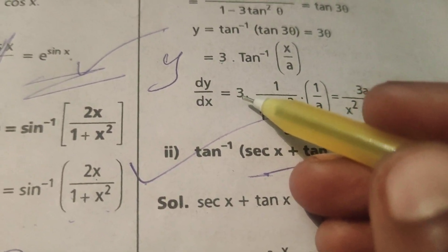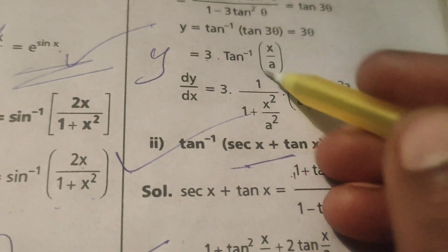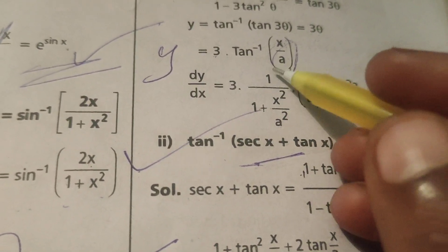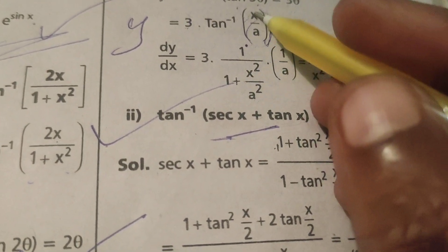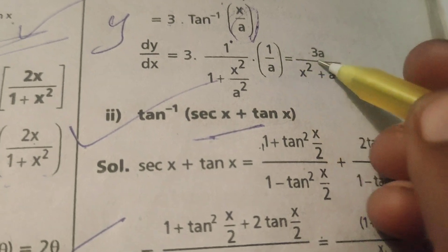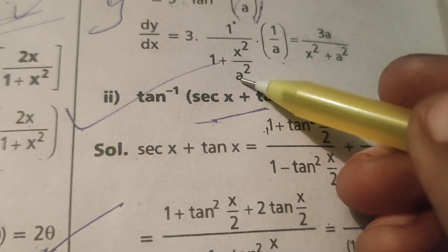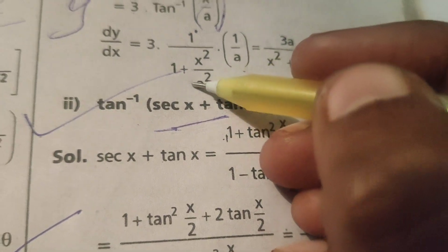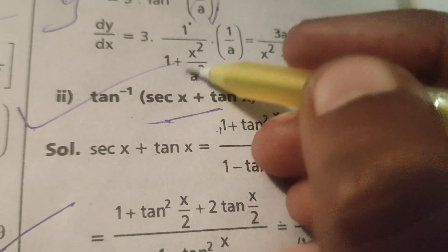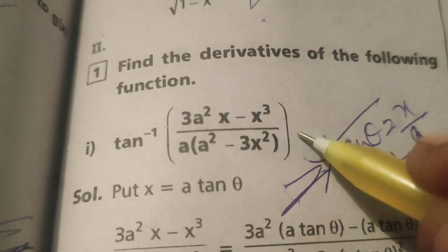Differentiating: dy/dx = 3 times the derivative of tan⁻¹(x/a). Using the formula d/dx[tan⁻¹(x)] = 1/(1 + x²), with x/a in place of x: dy/dx = 3 × 1/(1 + x²/a²) × (1/a). Simplifying, 1 + x²/a² = (a² + x²)/a², so dy/dx = 3 × a/(a² + x²). Therefore dy/dx = 3a/(x² + a²). This is the solution.